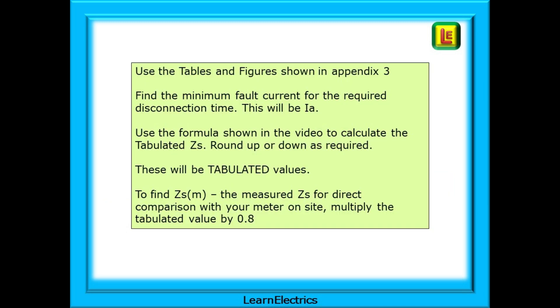Use the tables and figures shown in Appendix 3. Find the minimum fault current for the required disconnection time. This will be Ia. Use the formula shown in the video to calculate the tabulated ZS. Round up or down as required. These will be tabulated values. To find ZSM, the measured ZS, for direct comparison with your test meter on site, multiply the tabulated value by 0.8. And we will leave a link in the description to a video on the 80% values on tabulated ZS and measured ZS.